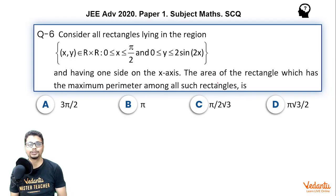The question for this video is this. Consider all rectangles lying in the region having points x, y where x and y both are real. x is between 0 close to π/2 close and y is greater than equal to 0 and less than equal to 2sin(2x). The rectangle has one side on x axis. We want area of that rectangle which has maximum perimeter. The options are given and it is a single correct question.